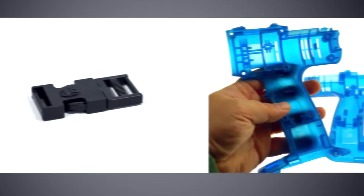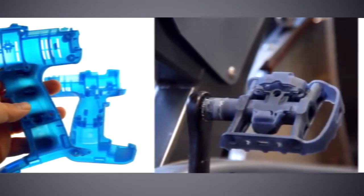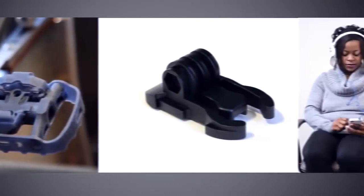Parts produced on the ProJet 3500 can be drilled, glued, painted, and plated. Whatever it takes so that you can see your part move and interact with other components.